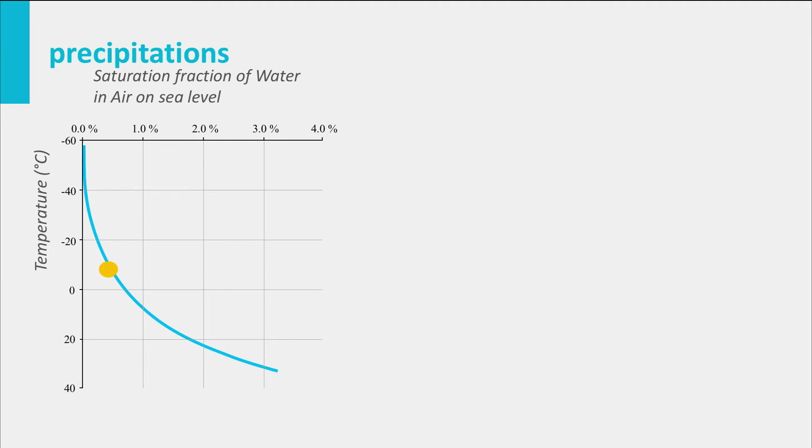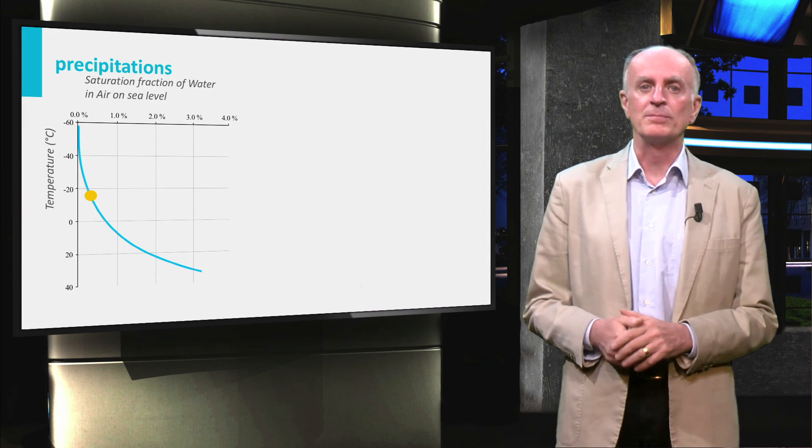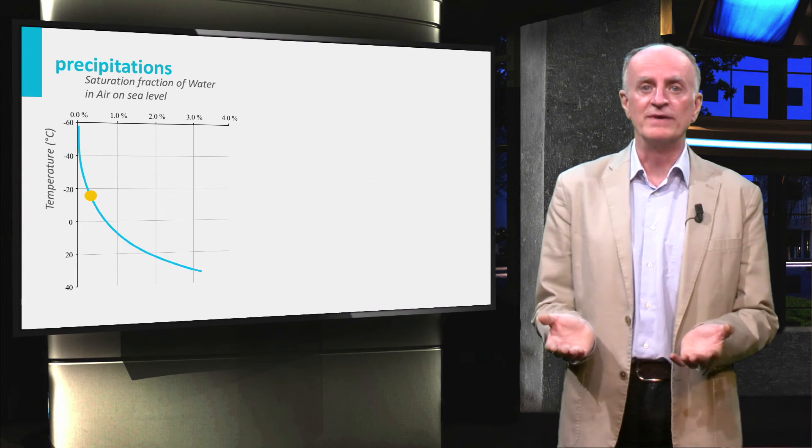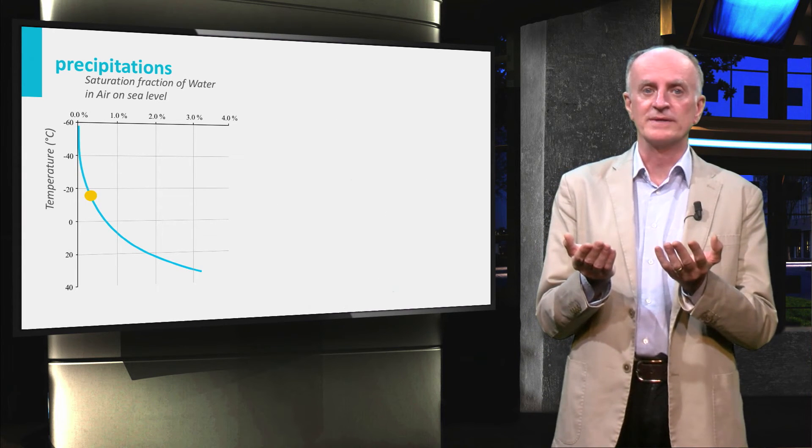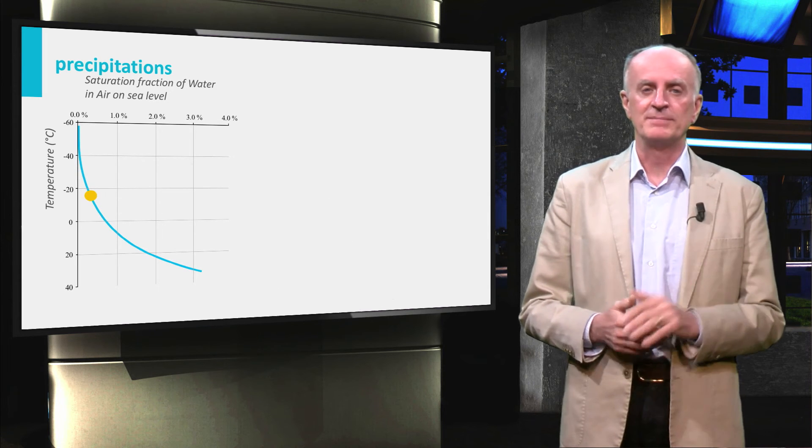Based on these principles, we can predict that precipitation will develop where air masses move upward and are therefore cooled. This happens in two first order places.